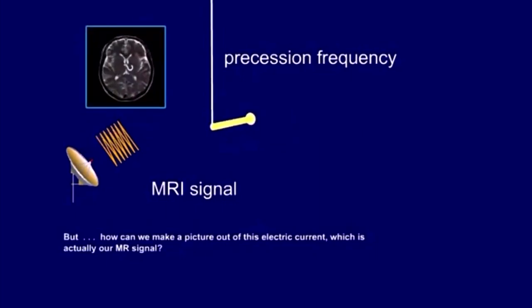But how can we make a picture out of this electric current, which actually is our MR signal? For this, we have to know where in the body the signal came from. How can we know that?